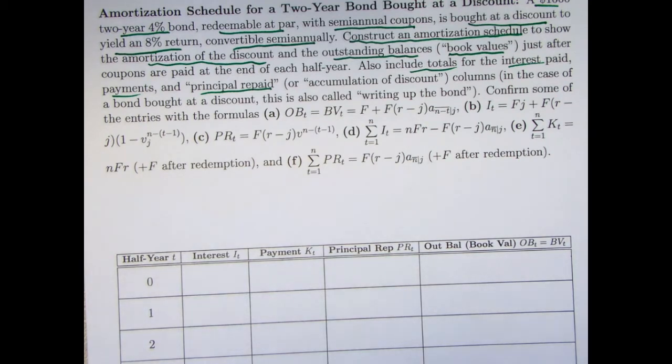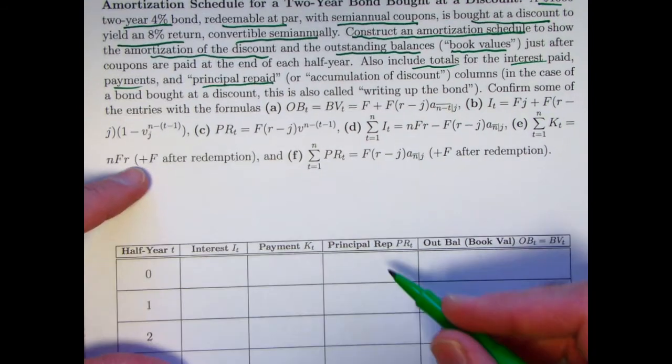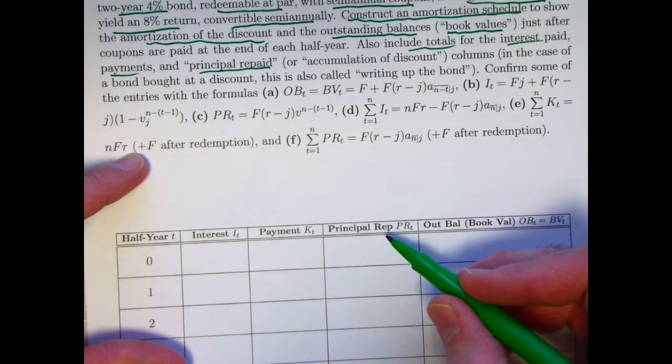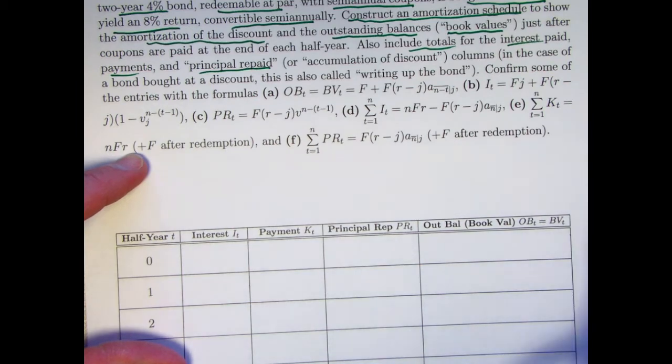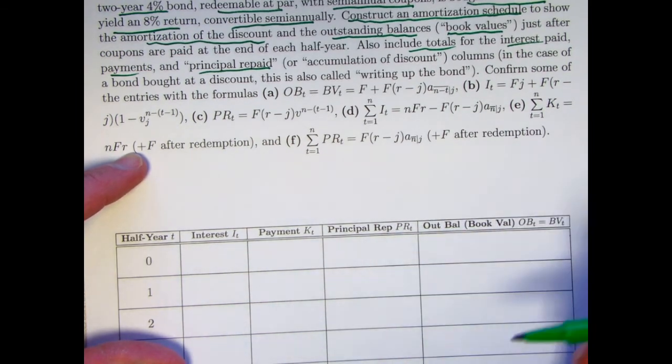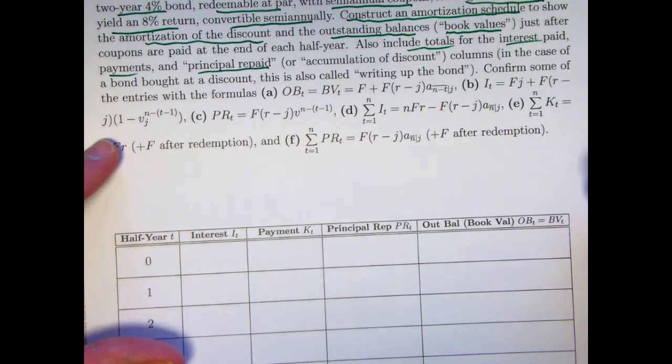You might call it a principal repossessed or something, but it's fortunate that repaid and repossessed both start with REP, and we can still call this PRT. I'm going to treat these as negative values, though, in the table so we can use the same formulas.